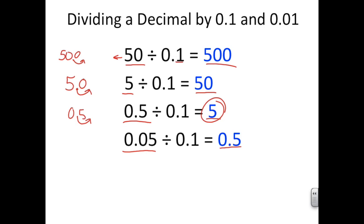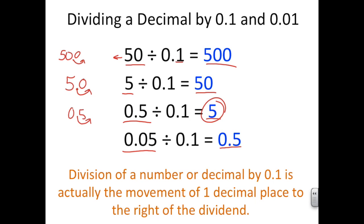So we noticed this pattern, and it's consistent. So since it's a consistent pattern that is always true, we were able to develop a rule. In class, we found that division of a number or decimal by 0.1 is actually the movement of one decimal place to the right of the dividend.